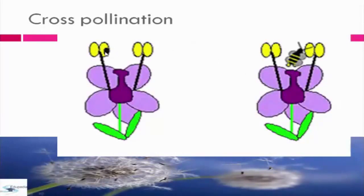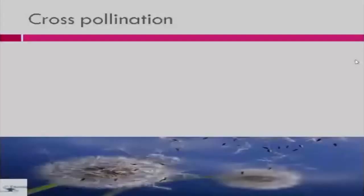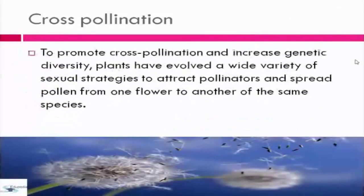As you can see from the first part, the bee is transferred to the second plant. Cross-pollination is meant to promote and increase genetic diversity. Plants have evolved a wide variety of strategies to attract pollinators and spread pollen from one flower to another of the same species.